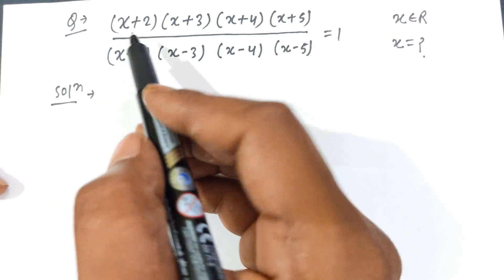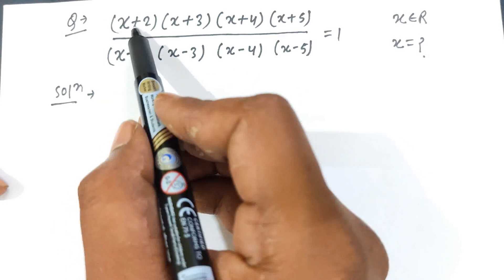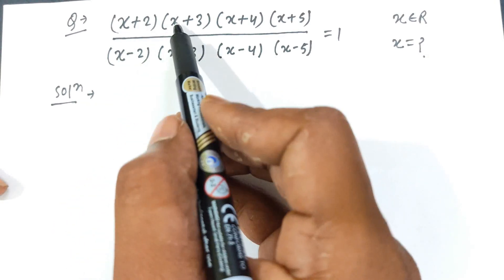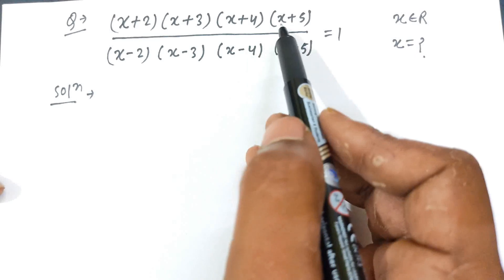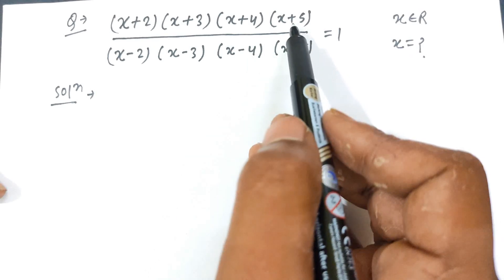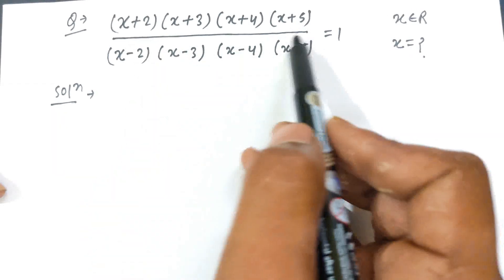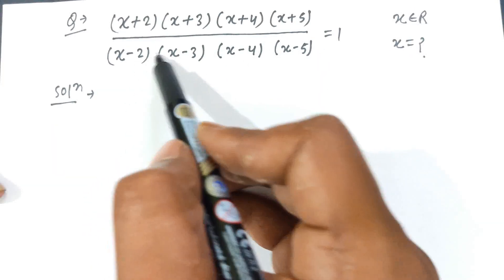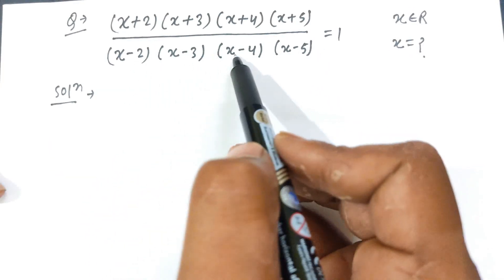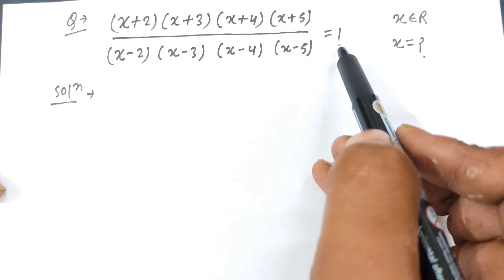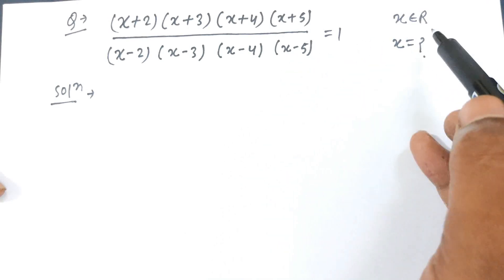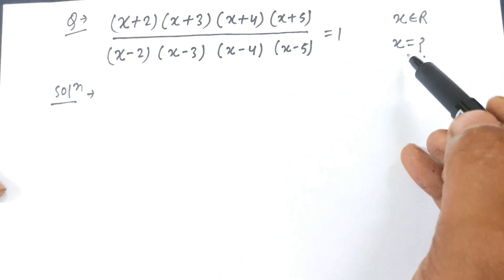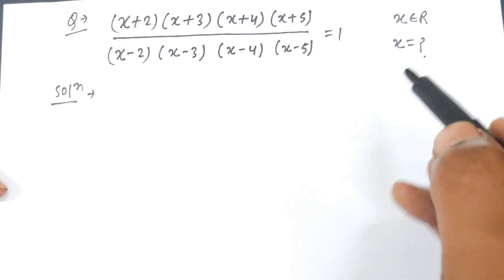Hello students. Today's question is: (x+2)(x+3)(x+4)(x+5) divided by (x-2)(x-3)(x-4)(x-5) equals 1, where x belongs to N. We will find the value of x.